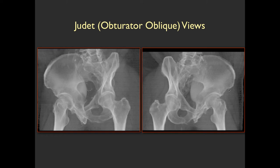These are virtual Judet views created from CT volume rendering. On the right posterior oblique, you see the ilium going down to the ischium — that's the posterior column. On the left side of the same view, you see the anterior column. Surgeons like to get these both with plain radiographs in five-view pelvis studies for initial diagnosis and follow-up. The main benefit is not so much to detect fractures as to assess fracture alignment and overall pelvic stability over time.